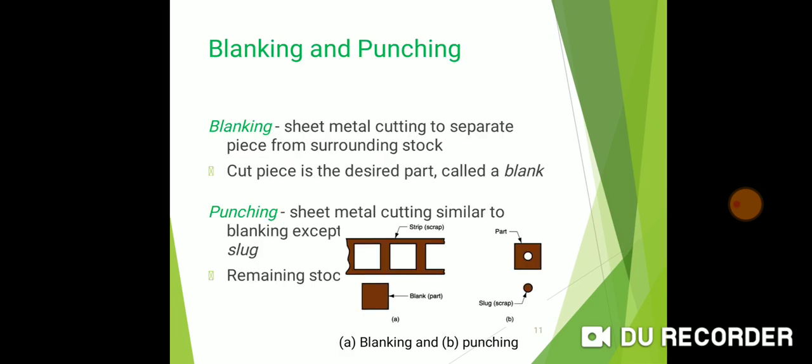Blanking and punching. Blanking: sheet metal cutting where the severed piece from the surrounding stock is the desired part. The cut piece is called a blank. Punching is similar to blanking except the remaining stock is the product.